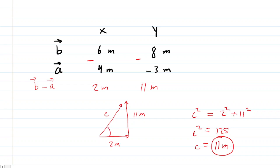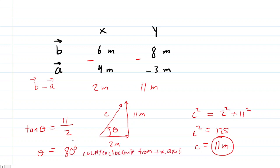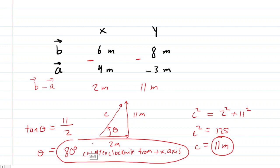For Part H, we need this angle. Using the same trigonometry, the tangent of the angle equals the side opposite over the side adjacent. Taking the inverse tangent of 11/2, we get about 80 degrees. That angle is 80 degrees counterclockwise from the positive x-axis. That is the correct answer for Part H.